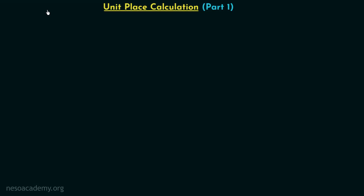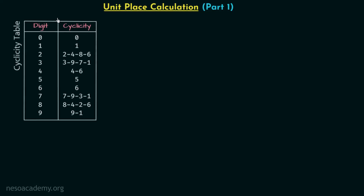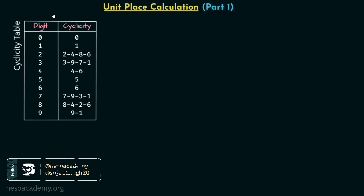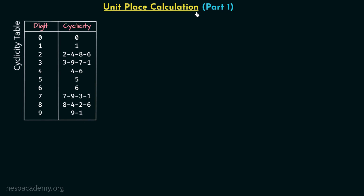In the last two lectures we calculated the cyclicities of decimal digits. Now we are going to use the obtained cyclicities to find the digit at the unit place when we have large powers in the calculation. This means we are going to perform unit place calculation with the help of cyclicities of decimal digits.